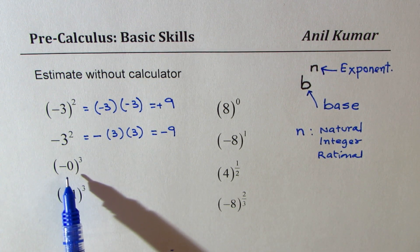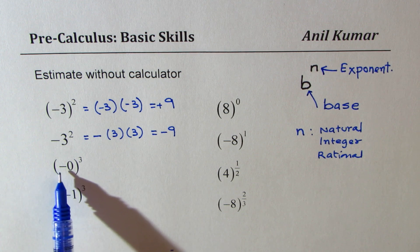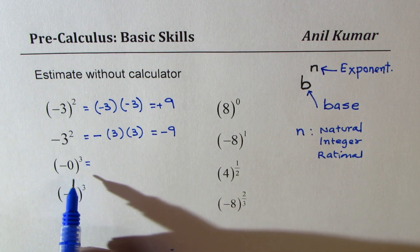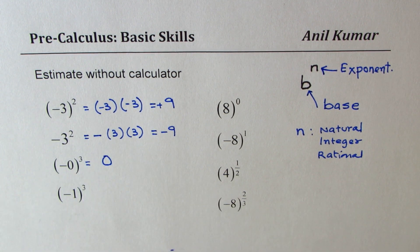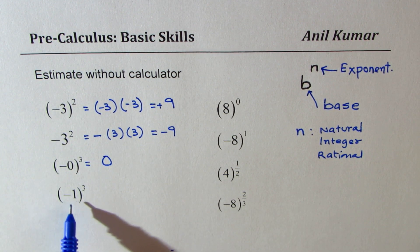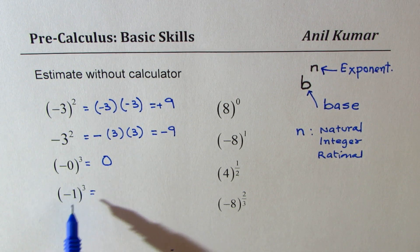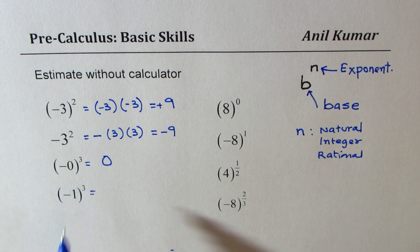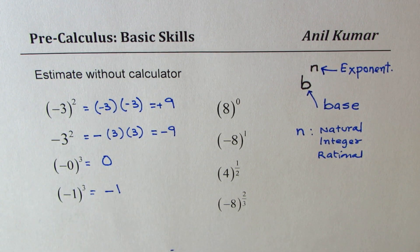As far as 0 is concerned, 0 is always treated as positive. So even if I write negative 0, it just means 0, and 0 to the power of anything will only be 0. Minus 1 cube: 1 cube is 1, but a negative odd number when cubed will result in minus 1.